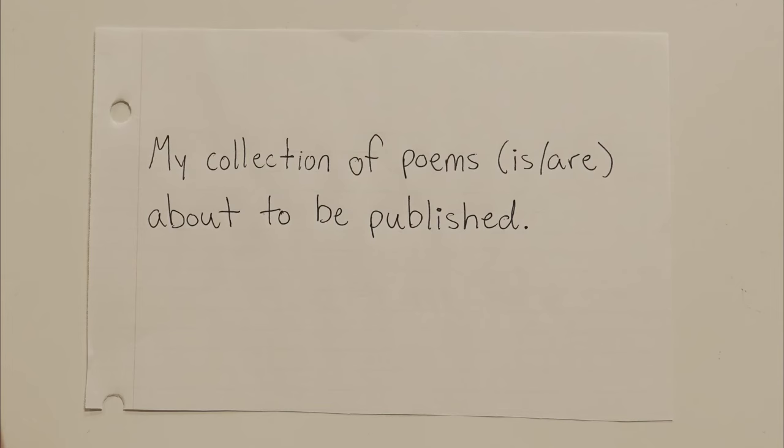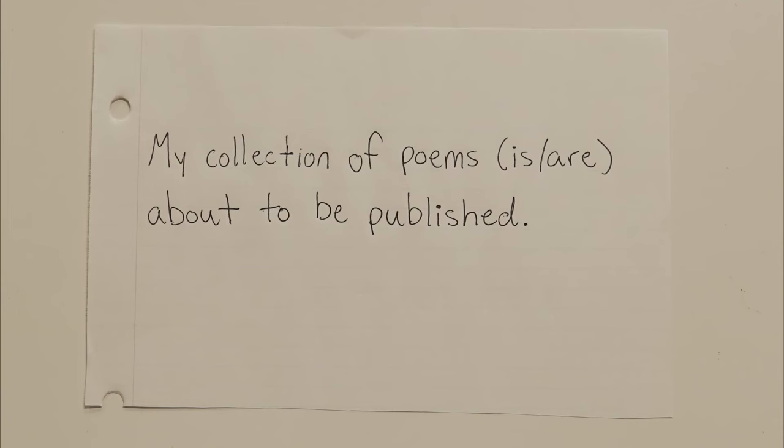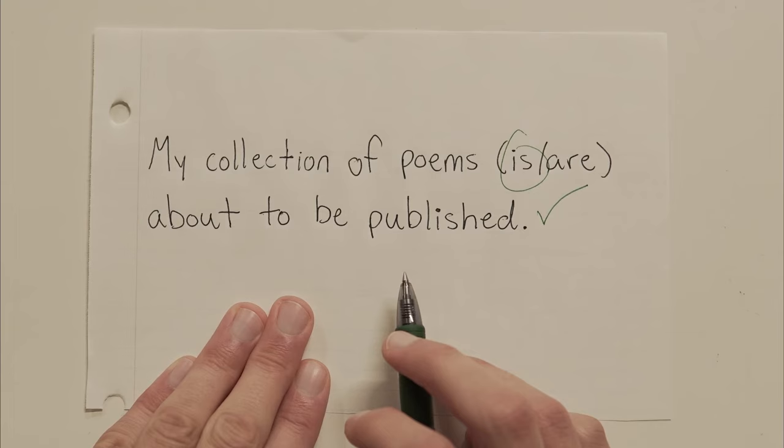Let's do a couple more like that. My collection of poems is about to be published, or my collection of poems are about to be published. Okay, again, we have this prepositional phrase that starts with of. So that should cue us into the fact that we have some extra fluff in this sentence, some extra filler going on here. And what do we do with that stuff? We ignore it. So if we ignore that part, that of poems part, we have, my collection is about to be published. My collection is.